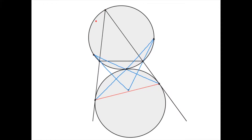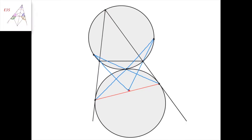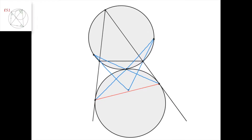We know that if this is the excenter of the triangle on this side, then this here is the external angle bisector of this angle, and this here is the external angle bisector of this angle. These external angle bisectors intersect the circumcircle of the triangle at exactly this point and this point — the midpoint of this arc and the midpoint of this arc. Now let's take this point of tangency and this point of tangency, connect them with a line and intersect with the circumcircle. It turns out that this point is exactly the midpoint of this arc.